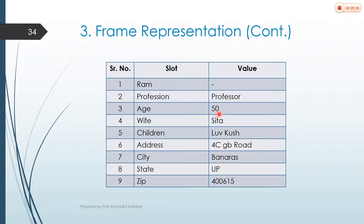Another slot is age, with value 15. Wife slot has value Sita. Children slot has values Luv and Kush. Address slot includes 4CGB road, city is Banaras, state is UP, and zip number is a number. So all of these are the slots — we can also call them frames — and these are the values of each slot. This is a simple example for frame representation used when we have a large amount of data to structure.